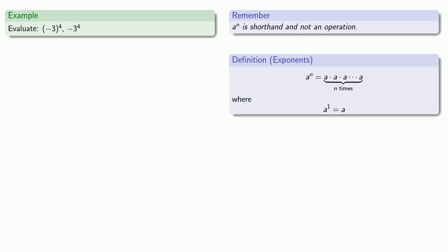My shorthand says that parenthesis negative 3 to power 4 is 4 copies of negative 3 multiplied together. That's 81.